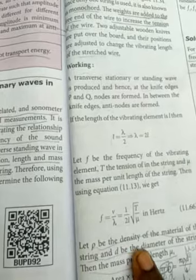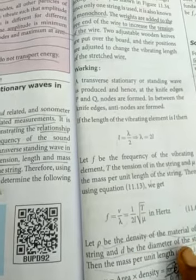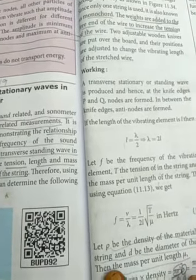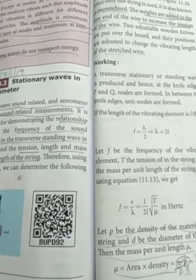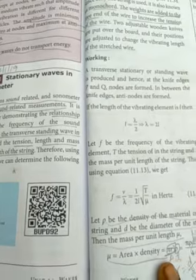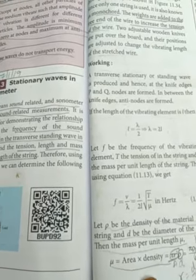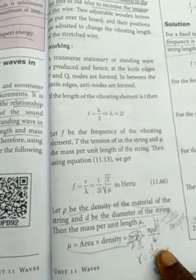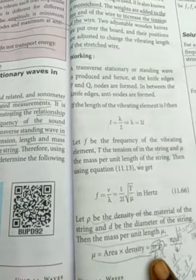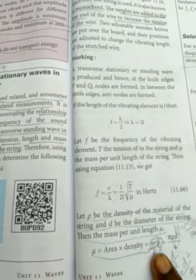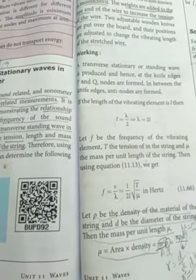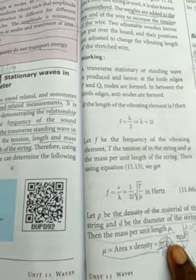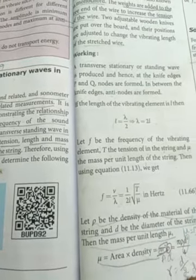Let rho be the density of the material of that string and D is the diameter of the string. So mu order value area into density. So area is pi R squared. So density is rho. So now you see pi value pi. R squared value, so R equal to D by 2. R squared value D squared by 4. That one we are applying. Pi rho D squared by 4.